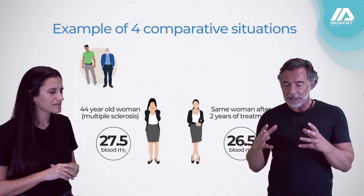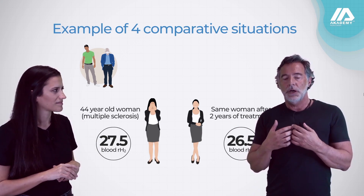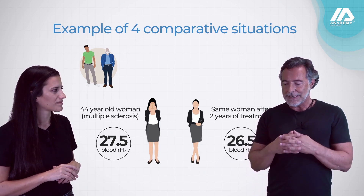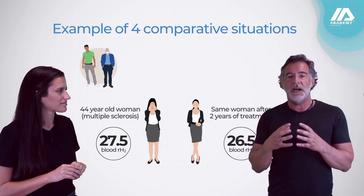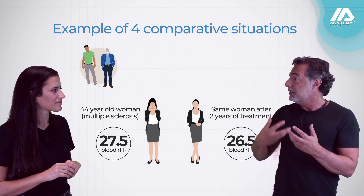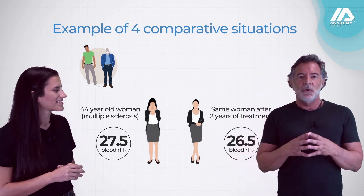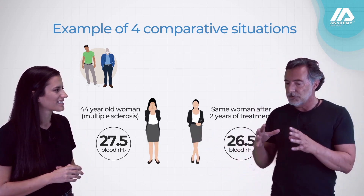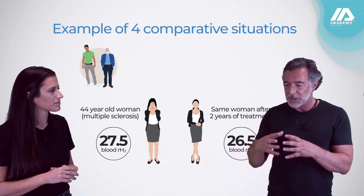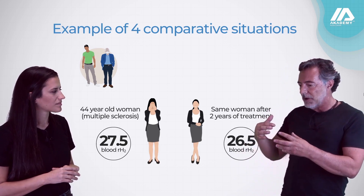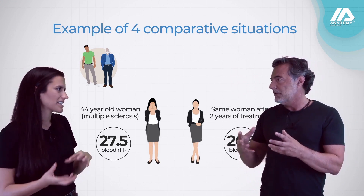Free electrons in our body — in my point of view — it's not quite what happens literally. It's not really possible to have free electrons. What we have inside us, because we are liquid and aqueous, is ions. So when we talk about electrons and losing electrons, in a deeper view, the concept is more about ions than electrons.